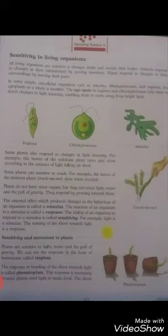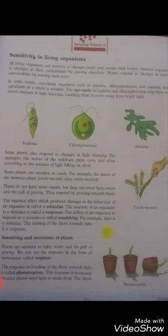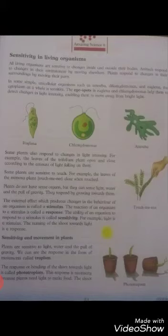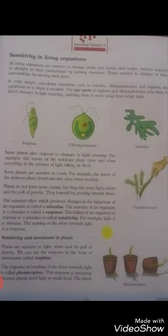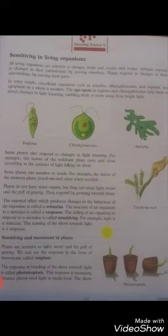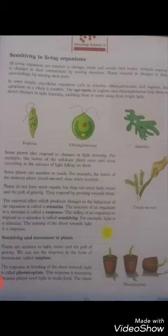They respond by growing towards them. The external effect which produces changes in the behavior of an organism is called a stimulus. The reaction of an organism to a stimulus is called a response. And the ability of an organism to respond to a stimulus is called sensitivity. For example, light is a stimulus; the turning of the shoot towards light is a response.